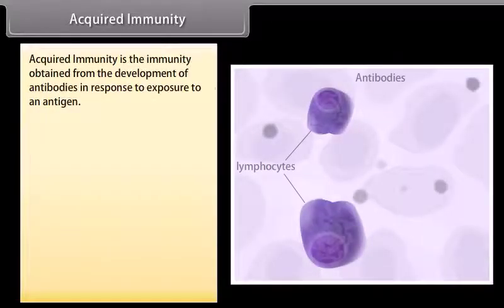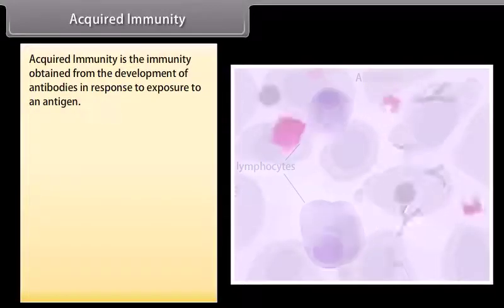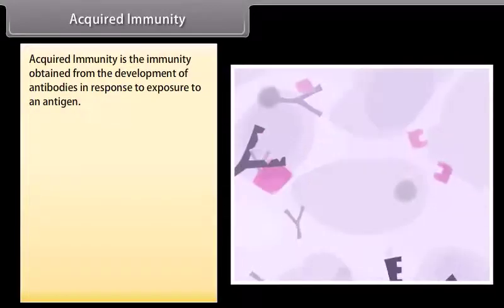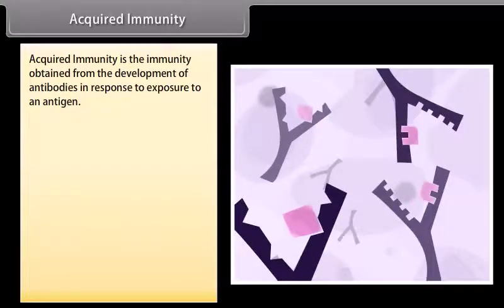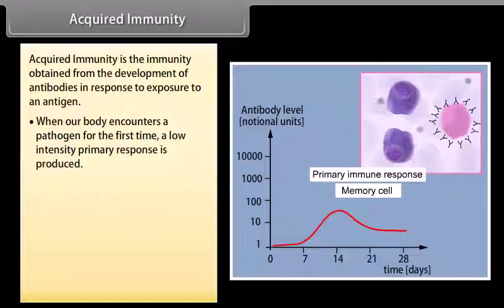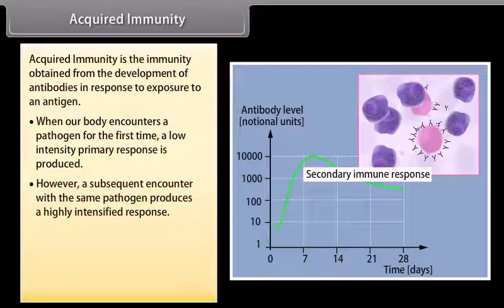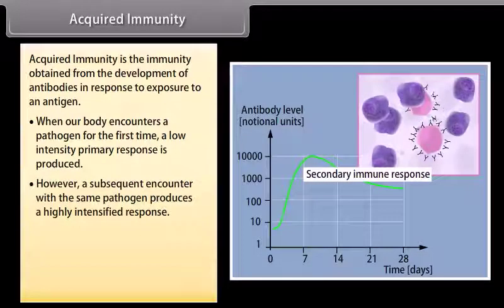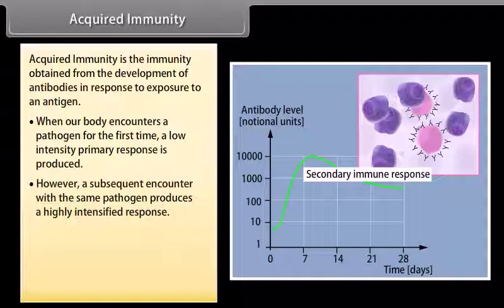Acquired immunity is the immunity obtained from the development of antibodies in response to exposure to an antigen. When a body encounters a pathogen for the first time, a low-intensity primary response is produced. However, a subsequent encounter with the same pathogen produces a highly intensified response.